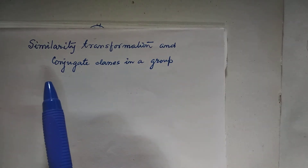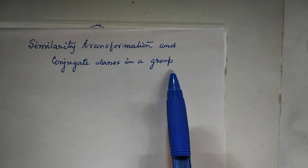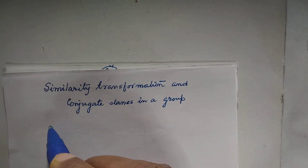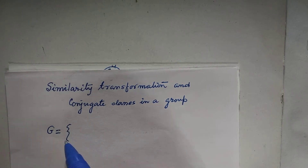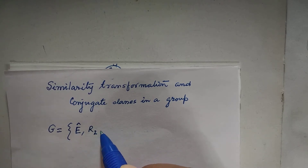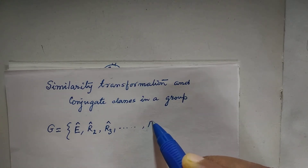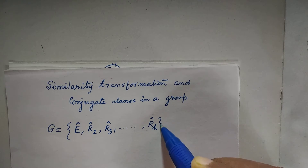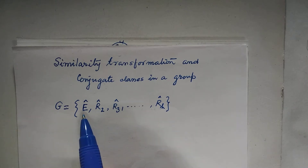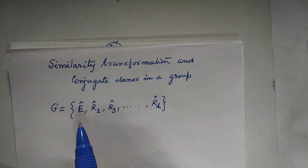In this video, I am going to discuss similarity transformation and conjugate classes in a group. Suppose G is a point group. It has symmetry operators: identity, then R2, R3, etc., up to R8. The symbol R1 for a symmetry operator is reserved for the identity, because identity must be present in a point group G.